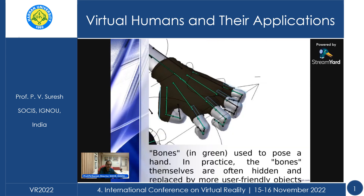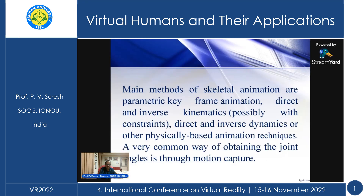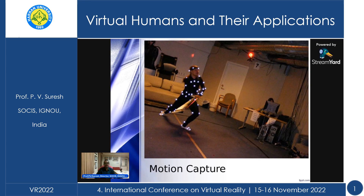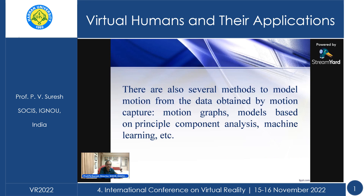You can see a virtual human with visible fingers, their movements, and degrees of freedom. The main methods of skeletal animation are parametric key frame animation, direct and inverse kinematics, direct and inverse dynamics, and other physically based animation techniques. A very common way of obtaining the joint angles is through motion capture. There are also several methods to model motion from data obtained by motion capture: motion graphs, models based on principal component analysis, machine learning, and other things.